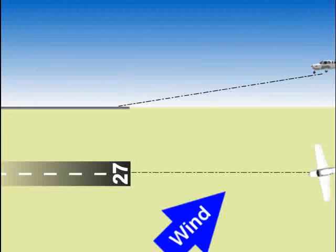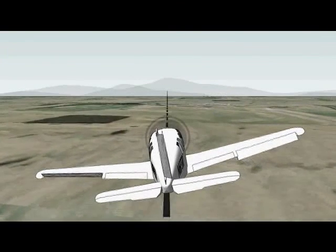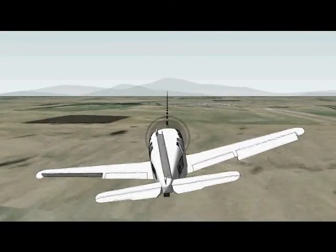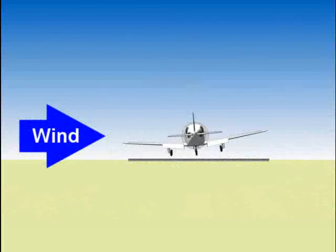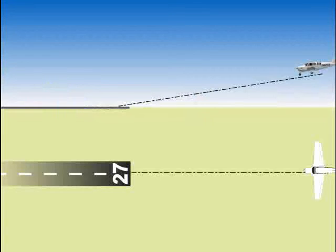Now, you cross control. Lower your left wing and push on the right rudder. Focus on keeping the airplane pointed down the runway with your rudder while you keep centered with ailerons and control airspeed with elevator.